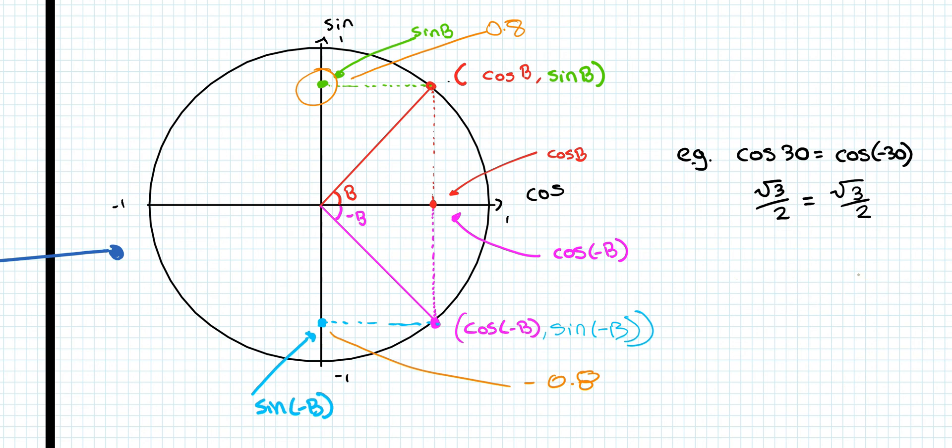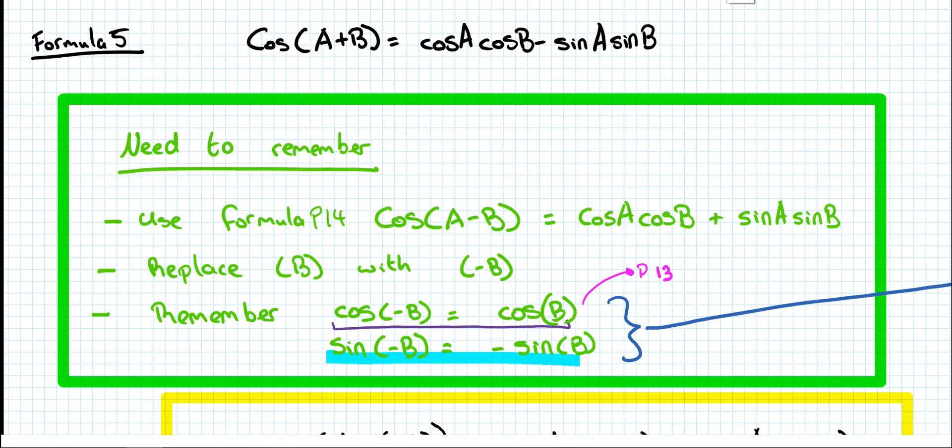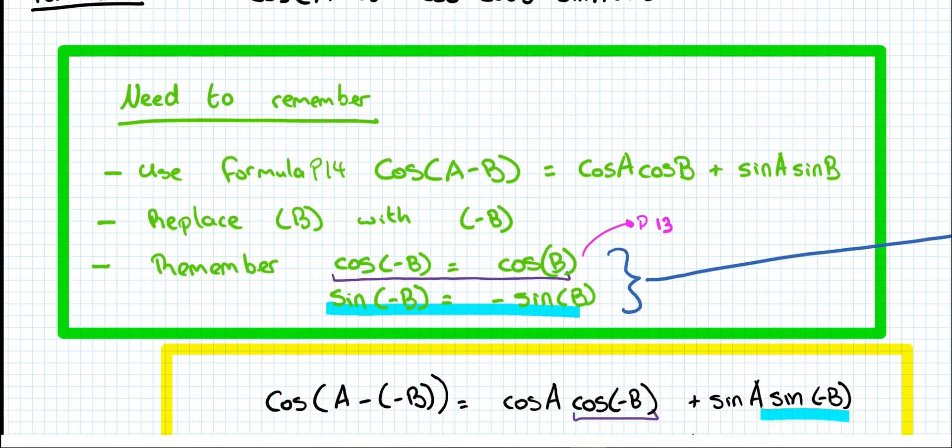So let's go back to the actual proof then. So you have your green box written out there. You start off by writing out what's on page 14. Which is, well, page 14 was this: cos(A-B) is equal to cosA·cosB plus sinA·sinB. And on point 2,